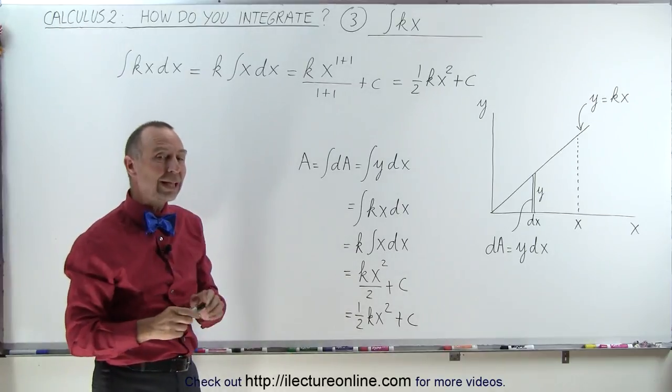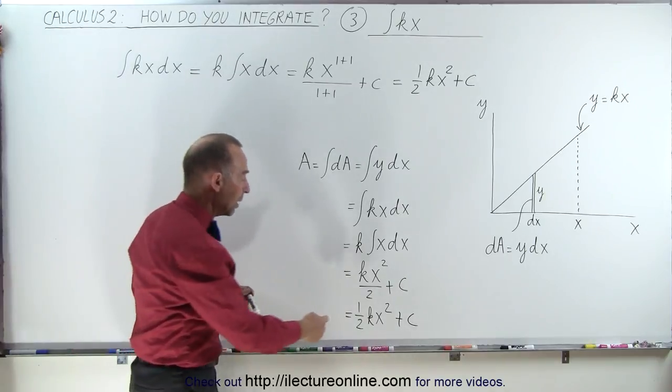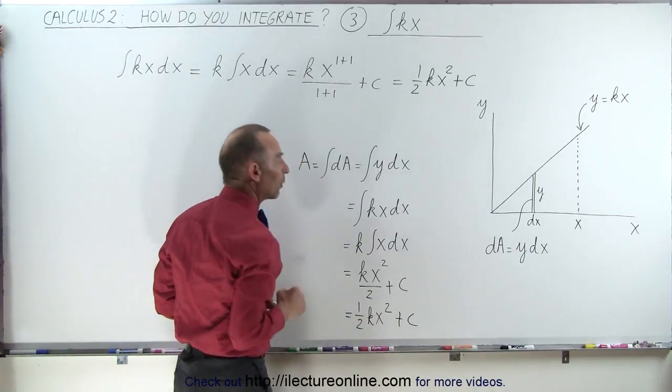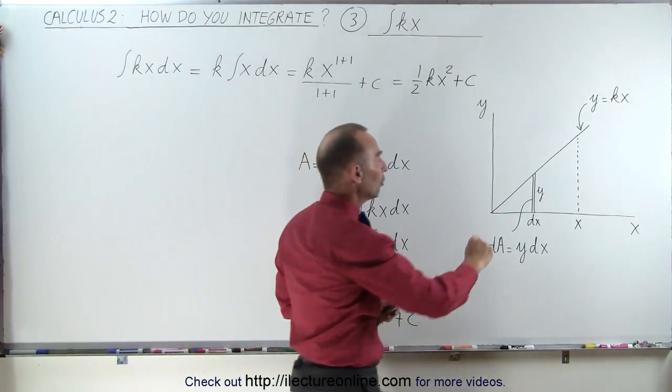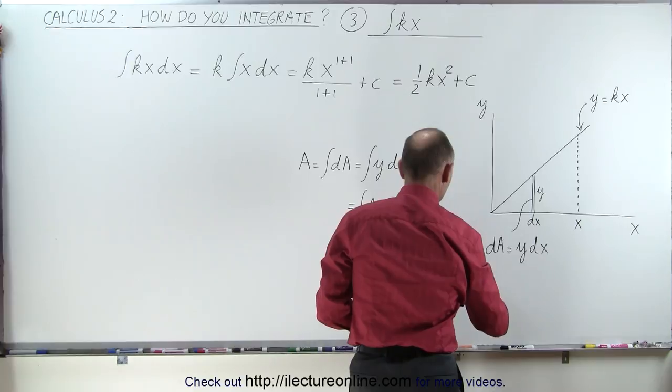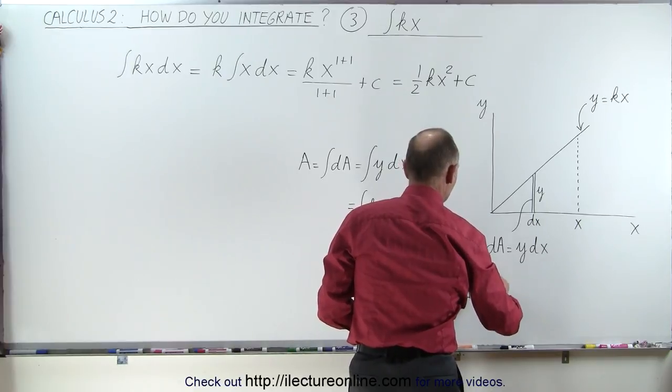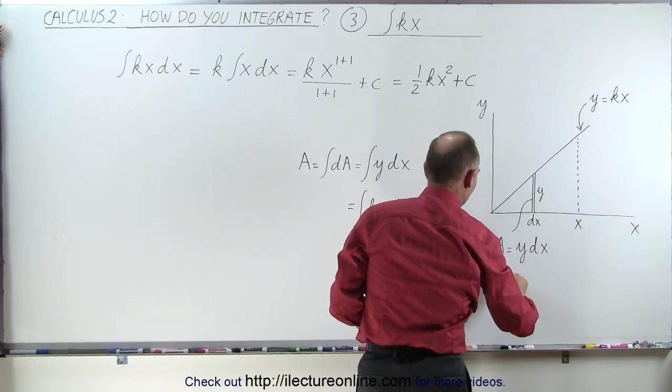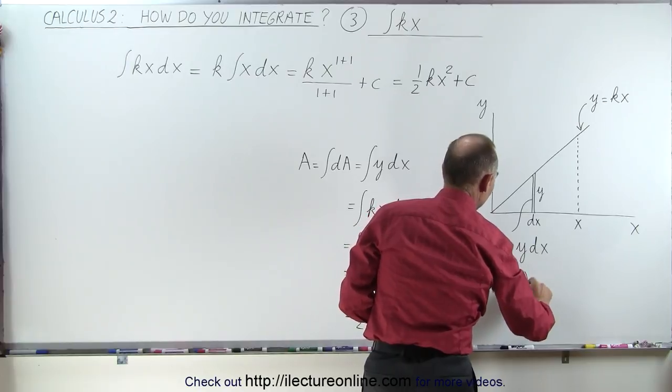Now, if we let that constant go to zero, and we only have the 1/2 kx squared here, let's compare that to our rectangle here. We know that the area of a rectangle is equal to 1/2 times the base times the height.